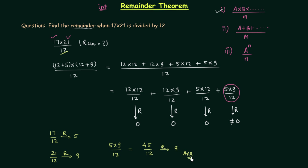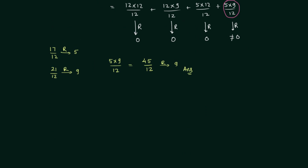The remainder is equal to 9. So the answer is 9. The only thing you have to remember is: obtain the individual remainders, multiply them, and then perform the division to get the final remainder. This will be more clear when we solve the next example.